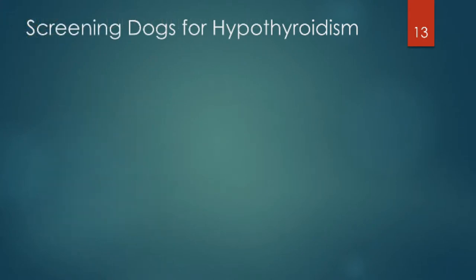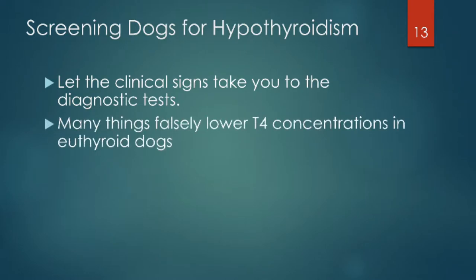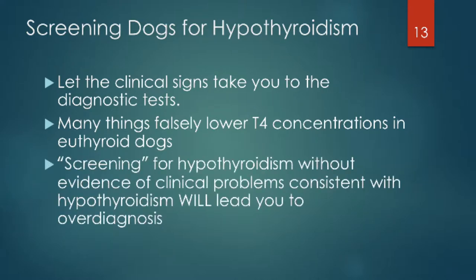Let's talk first about screening dogs for hypothyroidism. If you have a suspicion the animal might be hypothyroid, start with the clinical suspicion. Many things will lower T4 in a euthyroid dog — it's not falsely lowered, but it's not associated with hypothyroidism. Screening for hypothyroidism without those clinical problems consistent with that disease will lead you to over-diagnosis.